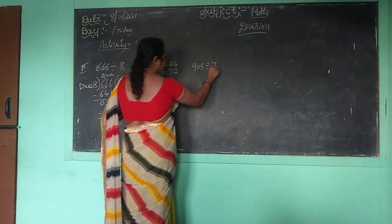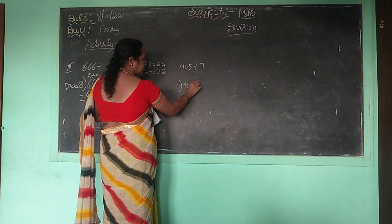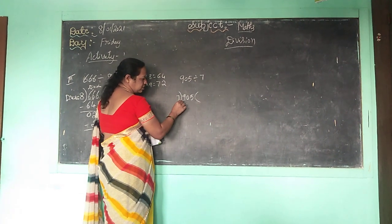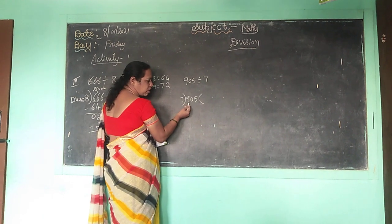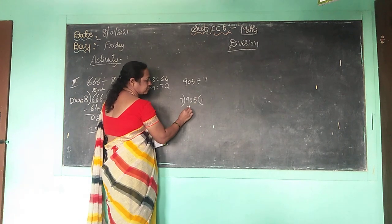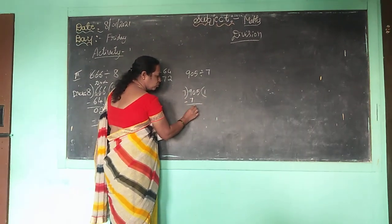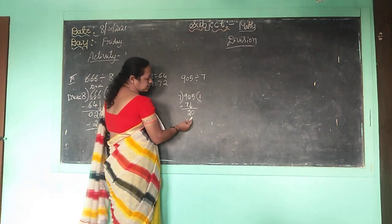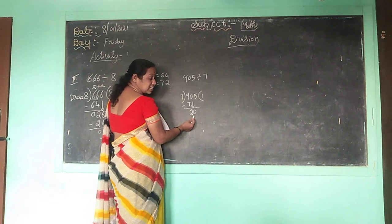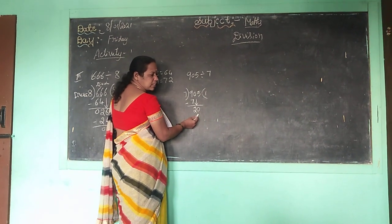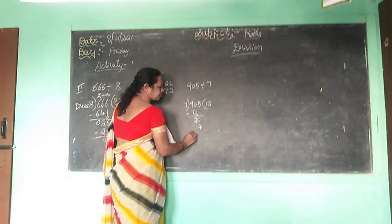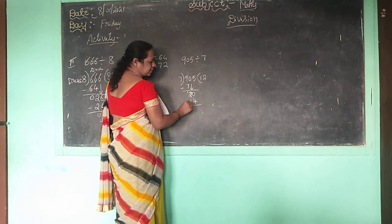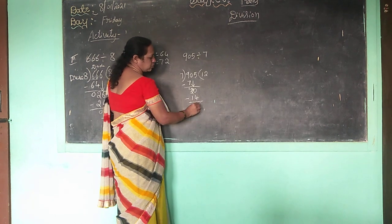905 divided by 7. From 7 you divide 905. Here 7 and 9 — we can divide. 7 ones are 7, 7 twos are 14 — but we want only 9, so go back: 7 ones are 7. Minus: 9 minus 7 is 2. Take 0 down — now 20. 7 ones are 7, 7 twos are 14, 7 threes are 21 — but we want only 20, so take 7 twos are 14. From 20 minus 14: borrow — 10 minus 4 is 6, 1 minus 1 is 0. Take 5 down — now 65.